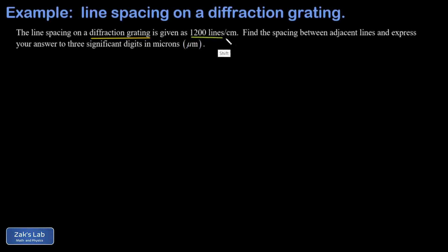And we're told that this diffraction grating has 1,200 lines per centimeter on it. We want to re-express that as the spacing between adjacent lines and give our answer in microns, which are also known as micrometers. So to go from lines per unit distance and change that into distance per line,